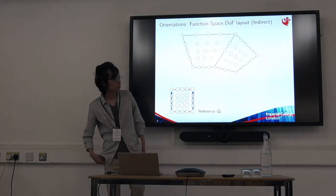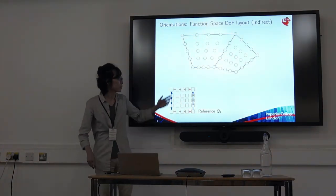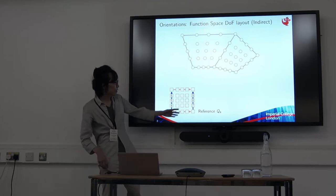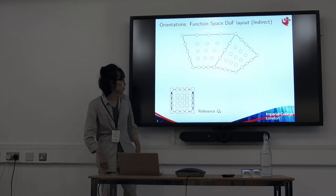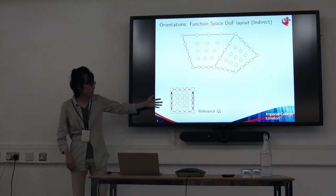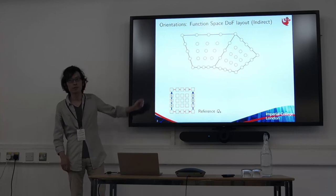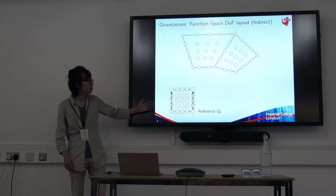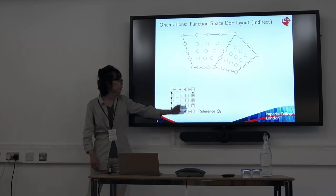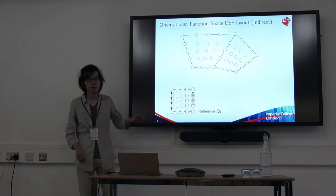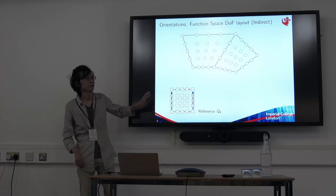I have to talk about orientations. This is about mapping from the reference element to the physical element, and we take this Q459 element on quad as an example. This is the reference element. We have 25 dots and 3 dots on each edge, and each edge has an orientation indicated by the arrow. In our definition, we lay out local dots, for example 456789, so that the number increases in the direction of the arrow. We can define it differently but it doesn't change the nature of the problem.